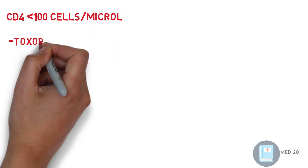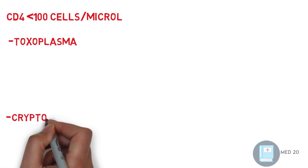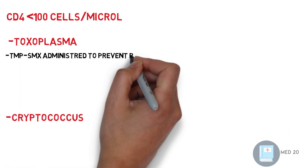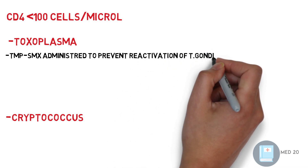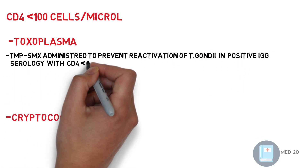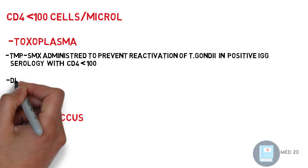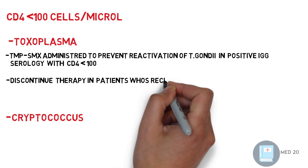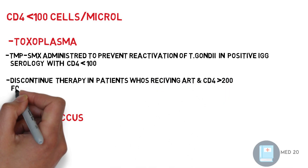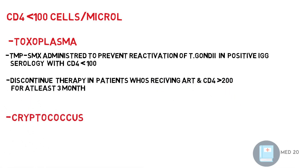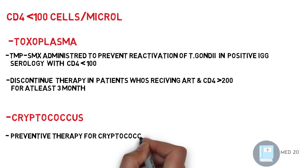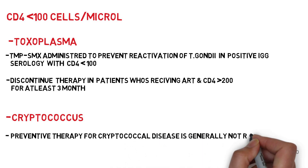CD4 less than 100 — toxoplasma and cryptococcus: For toxoplasma, Bactrim is administered to prevent reactivation of T. gondii in patients with positive IgG serology and CD4 less than 100. Discontinue therapy in patients receiving ART with CD4 greater than 200 for at least three months. For cryptococcus, preventive therapy for cryptococcal disease is generally not recommended.